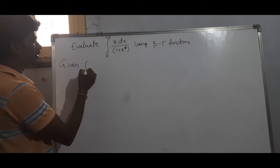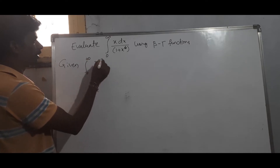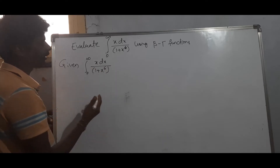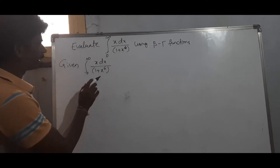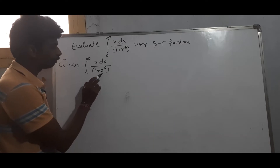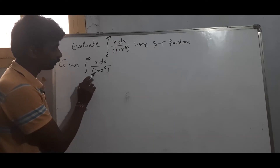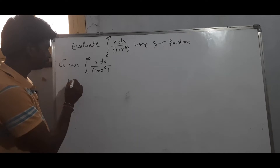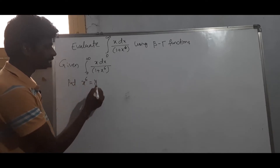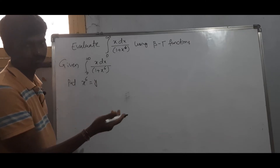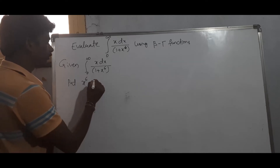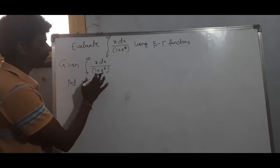Given: the integral from 0 to infinity of x dx divided by (1 plus x to the power 6). We apply the substitution: let x to the power 6 equal t.